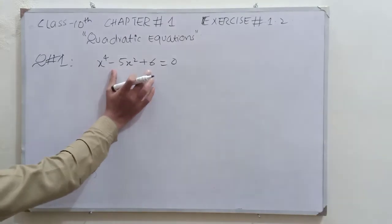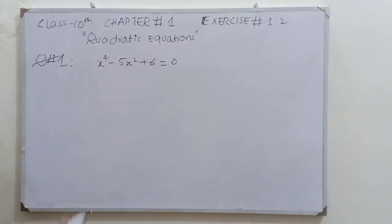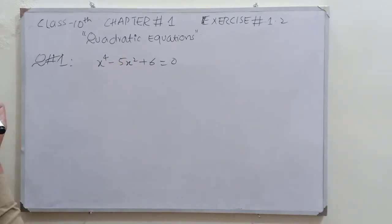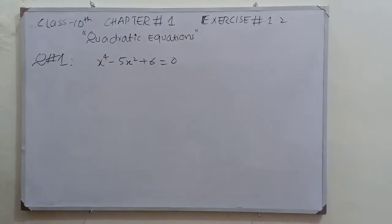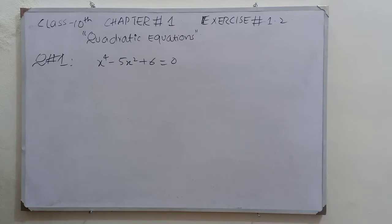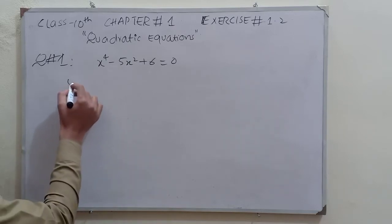This equation is a quadratic-type equation because the highest power of the variable x is 4. This type of equation is not solved very easily directly. We reduce this type of equation to a quadratic equation by making some substitution.